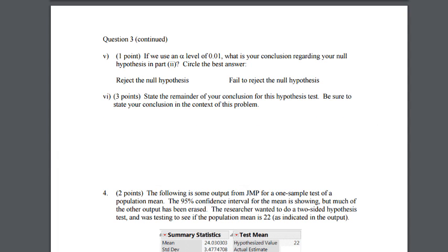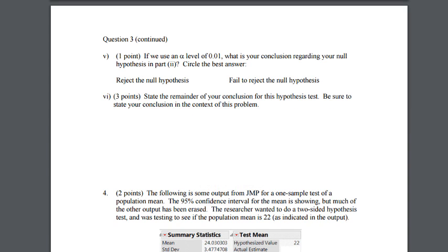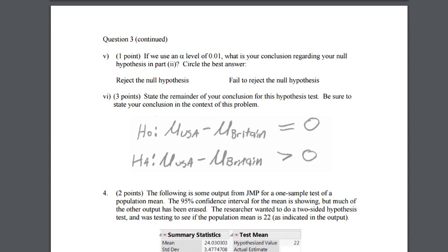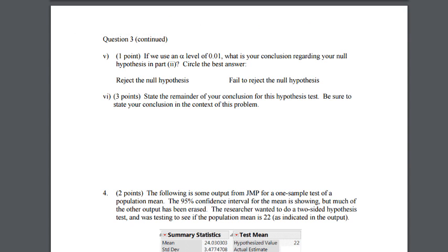Since alpha is 0.01 and our p-value is 0.0054, which is less than 0.01, we reject the null. Our conclusion: I reject the null that the true difference in heights between men in the United States and men in Britain is equal to zero. I have evidence for the alternative that the true difference is positive, meaning men in the United States are taller on average than men in Britain.